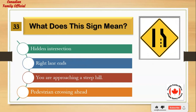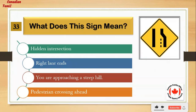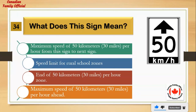What does this sign mean? Number 1: hidden intersection. Number 2: right lane ends. Number 3: you are approaching a steep hill. Number 4: pedestrian crossing ahead. And the answer is: right lane ends.